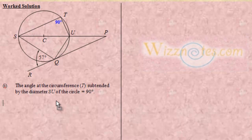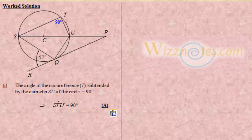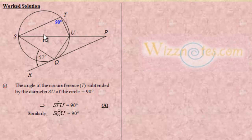So we have angle STU equals 90 degrees, subtended by the diameter. And for the same reason — also subtended by diameter SU — angle SQU is also going to be 90 degrees. So we can go ahead and put that angle in: that angle is 90 degrees.